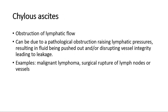For chylous ascites, it is mainly due to an obstruction of lymphatic flow. This can be due to a pathological obstruction raising lymphatic pressures, resulting in fluid being pushed out and disrupting vessel integrity, leading to leakage. Examples include malignant lymphoma and surgical rupture of lymph nodes or vessels.